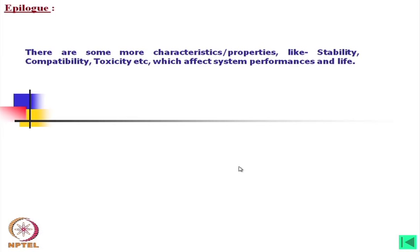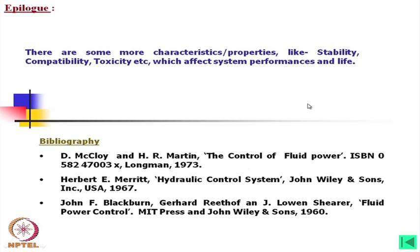In closing, there are some more characteristic properties like stability, compatibility, and toxicity that affect system performance and life, which have not been discussed in detail. While carrying out dynamic analysis or any other analysis, sometimes we need to consider all such things. For details you can follow three books: for properties, the books by Martin and McCloy and by Blackburn and Reethof are recommended. However, the Merrit book is also useful for carrying out calculations for valves and systems. Thank you for listening.